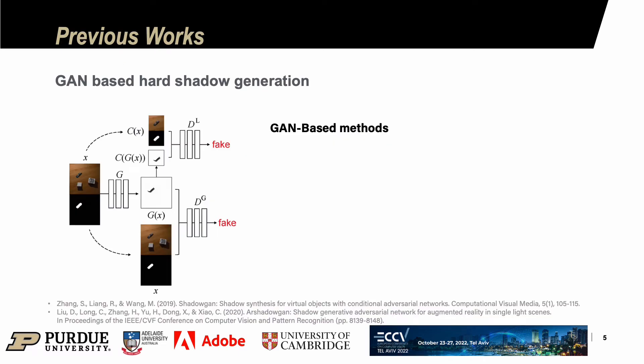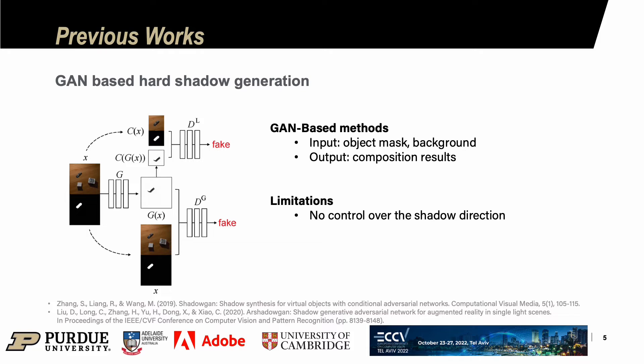Previous scan-based methods can render hard shadows to match the background given the object mask. However, in many design processes, there is just a plain background without other shadow hints. No control over the shadow direction will limit the use cases. Also, previous works cannot render soft shadows.